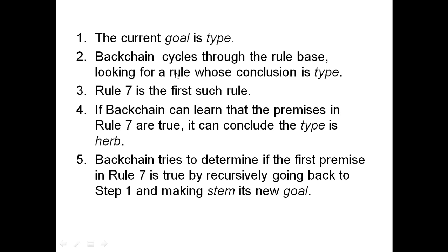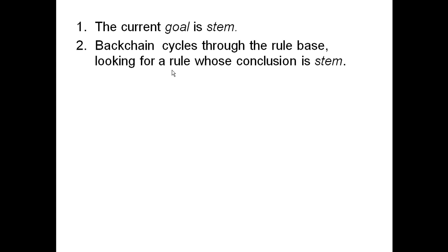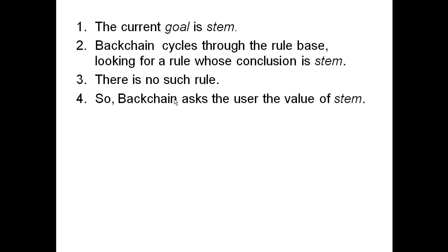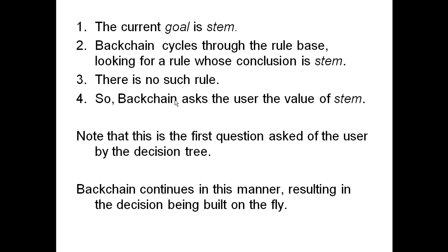Backchain tries to determine if the only premise in rule seven is true by recursively going back to step one and making 'stem' its new goal. Backchain cycles through the rule base looking for a rule whose conclusion is stem. There is no such rule. This is the terminal condition — every recursive algorithm has a terminal condition to end the recursion, otherwise it would go on infinitely. When there is no such rule, backchain asks the user the value of stem. That's exactly what the decision tree did — this is the first question asked of the user by the decision tree.